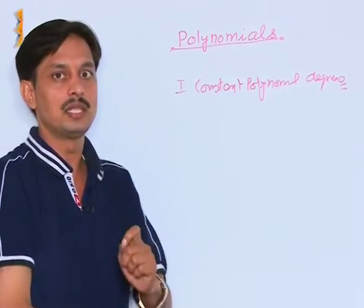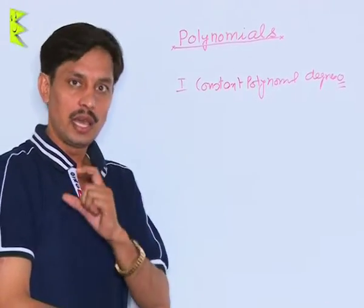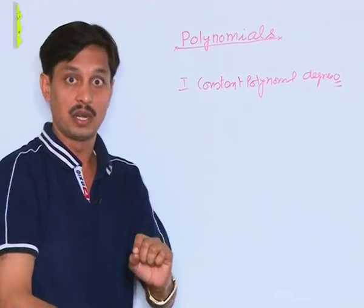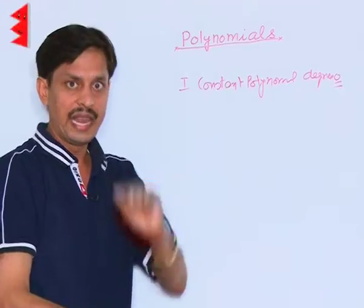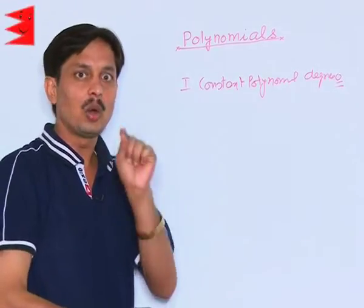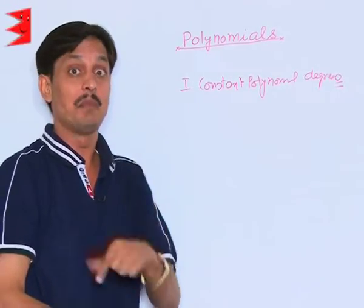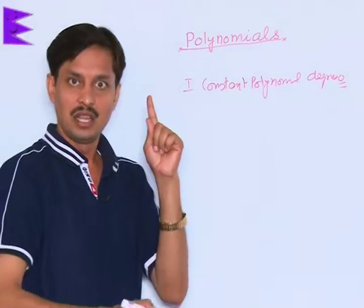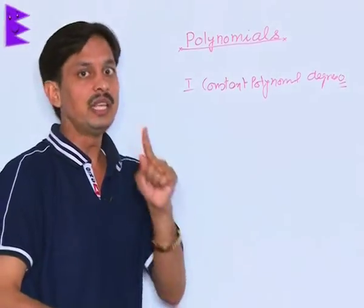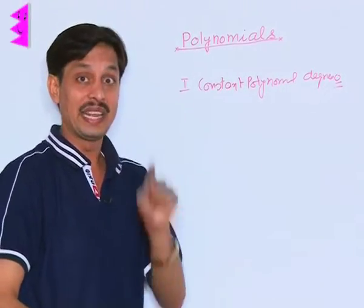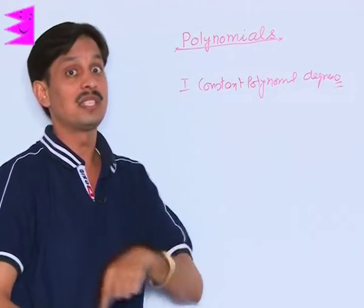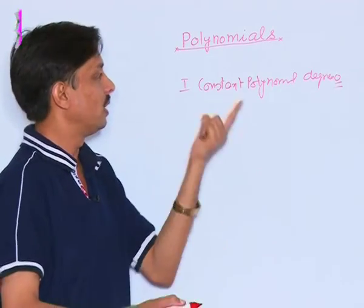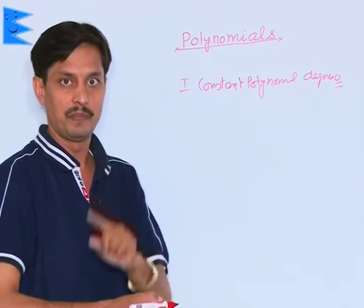In other words, any rational or irrational number — that is, any real number — has degree 0. So every real number is a constant polynomial.